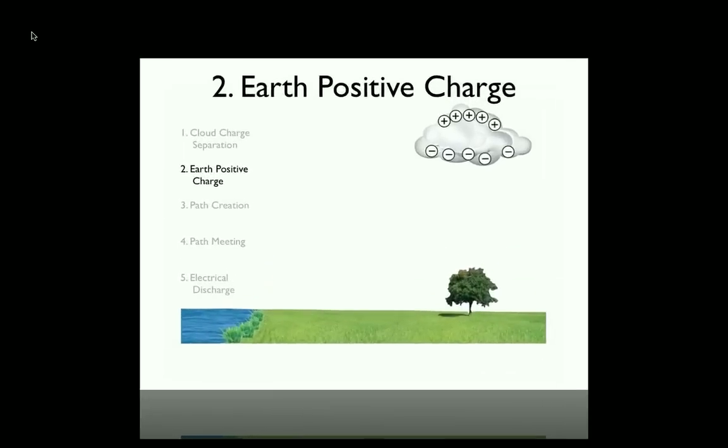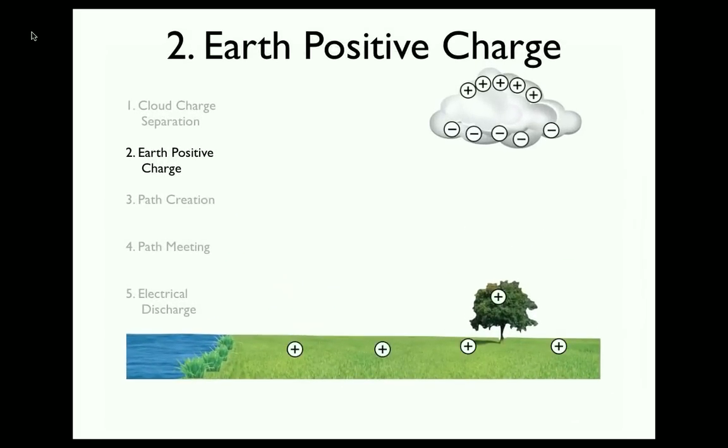Now in the next stage, the Earth acquires a positive charge. This happens when the cloud charge separation is so strong that the strong negative charge at the bottom of the cloud causes the Earth's surface to acquire a strong positive charge, in the same way the opposite poles of a magnet attract.